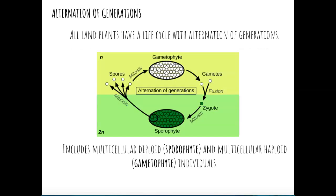All land plants have a life cycle that includes an alternation of generations. For part of the plant's life, it is a multicellular diploid organism, and for another part it is a multicellular haploid individual. The amount of time spent as either diploid or haploid depends on the type of plant. In plant terms, a diploid organism — one with two copies of the genome — is known as a sporophyte, meaning a plant that releases spores. When multicellular and haploid — with one copy of the genome — it is a gametophyte, meaning a plant that makes gametes.